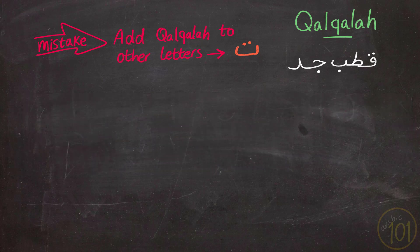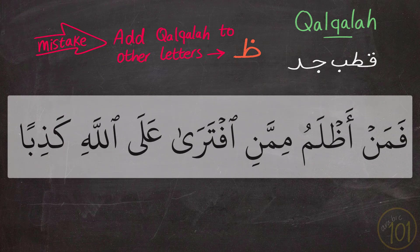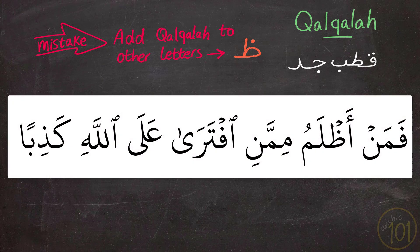Moving to another example of this common mistake, but this time with the letter dha when it comes in the middle of a word with sukoon on top, specifically in a particular word. Let's have a look at the example and see what kind of mistake can happen in this ayah.